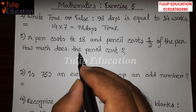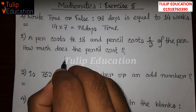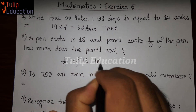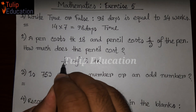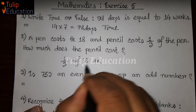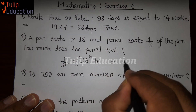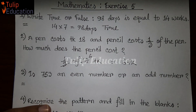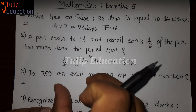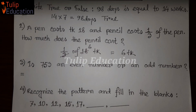The pen costs 18. The pencil costs one third of the pen cost. So, one third of 18 equals 6. The pencil costs 6. Dividing 18 by 3, we get 6, which is one third of the price of the pen.